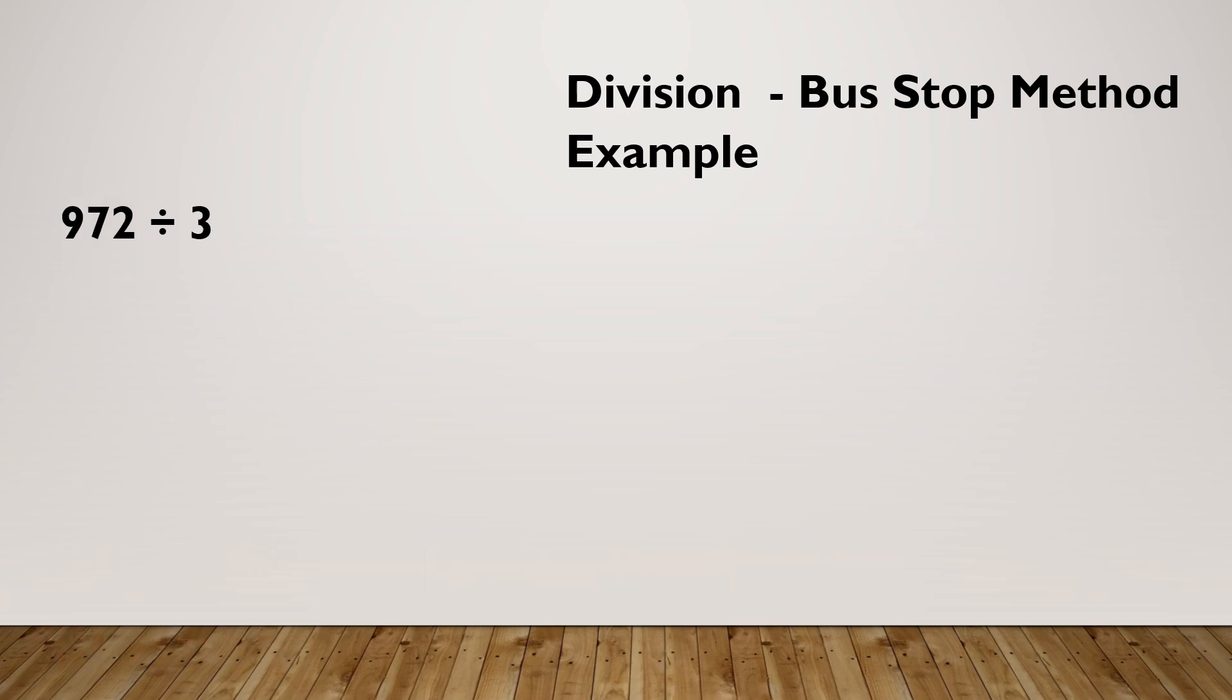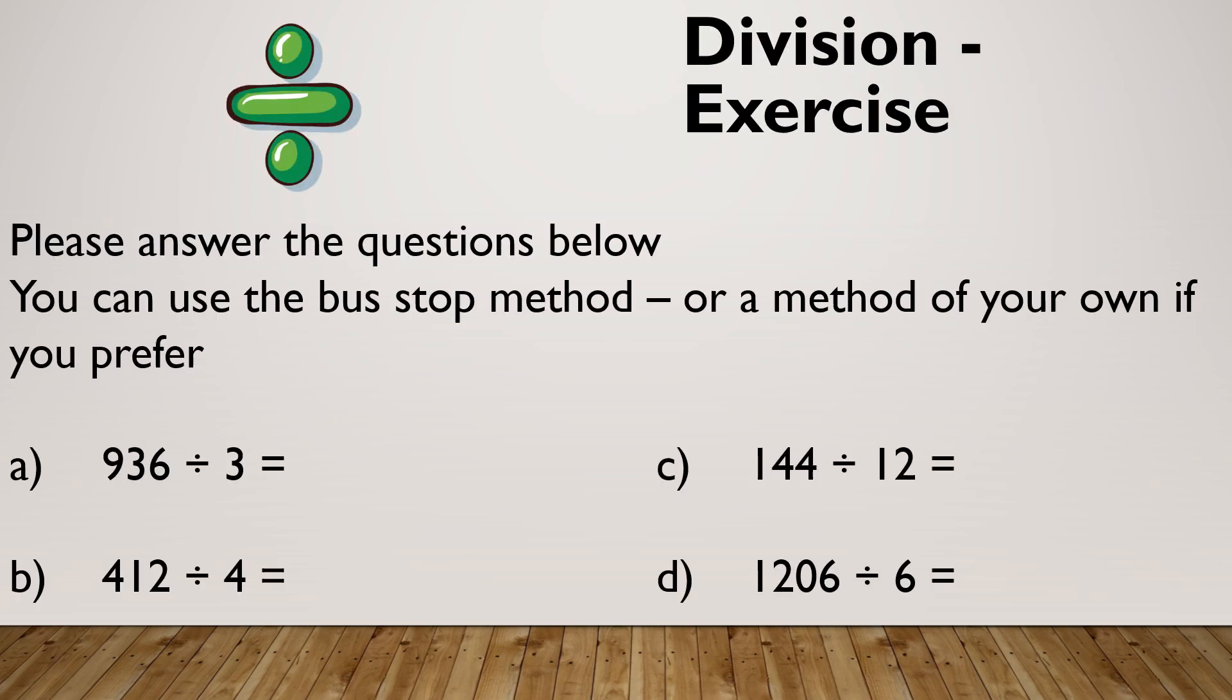Let's look at another example. 972 divided by 3. My 972 goes inside, my 3 goes outside. How many 3's in 9? There's 3. How many 3's in 7? There's 2, remainder 1. And how many 3's in 12? There is 4.